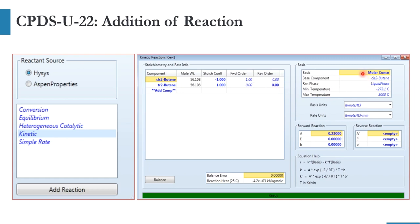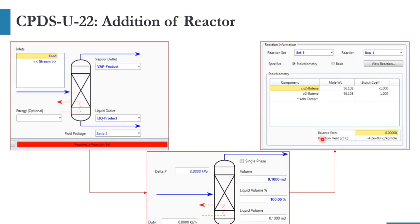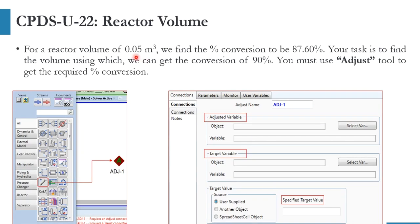The basis is molar concentration; units are pound-mol per cubic foot and rate units are pound-mol per cubic foot per minute. The value of A (which is K) is 0.23, and the value of activation energy E is zero. After that we select the CSTR, the feed is specified as vapor-liquid, the liquid volume should be set to 100%. For a trial volume of 0.05 cubic meters we get a percentage conversion of 87.6%.